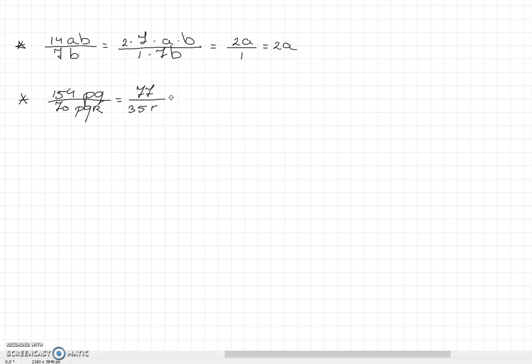We can still write down another step and divide both the numerator and denominator by 7. Then we end up with 11 in the numerator and 5 times r in the denominator.